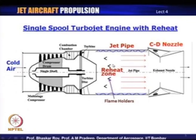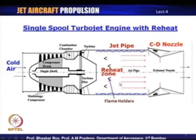Let us look at this jet pipe a little more. What you are doing here is you are raising the temperature to very high values all over again. Since the gas temperature is going to be very high — created through flame holders and other processes — you would have a uniform temperature profile after the reheat zone and this temperature is quite high. So you need to create a situation where the jet pipe or the outer shell of the jet pipe is protected from this very high internal temperature. What you see here — these undulations — are essentially liners created to protect the body of the engine from the very hot gases.